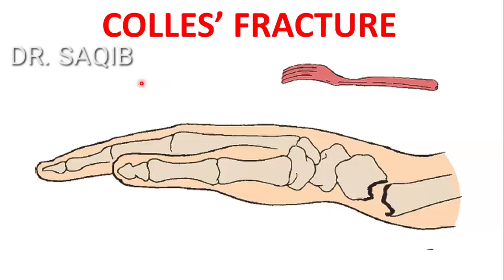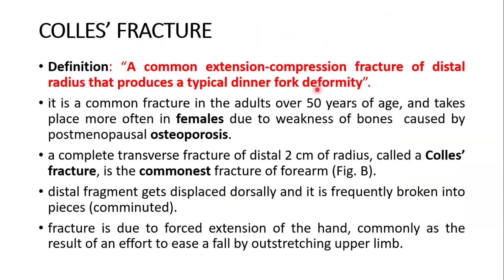Hi, I am Dr. Sakeh Mansour and today I will discuss with you the fracture of the distal end of the radius — the Colles' fracture — where the distal end of the radius gets dorsally and laterally displaced, producing a dinner fork deformity. It's a common extension compression fracture of the distal radius that produces a typical dinner fork deformity.